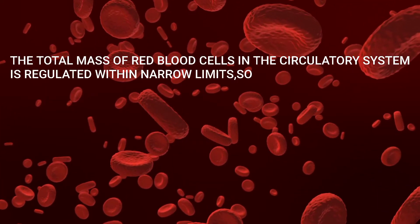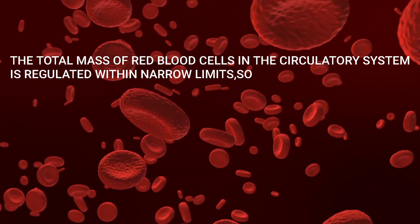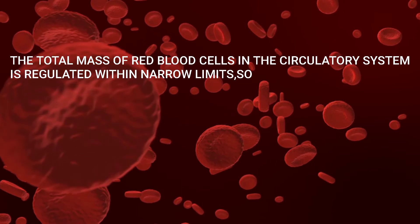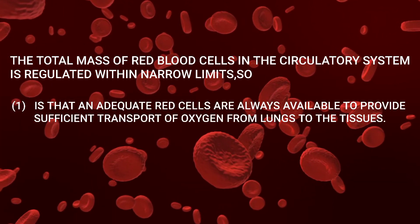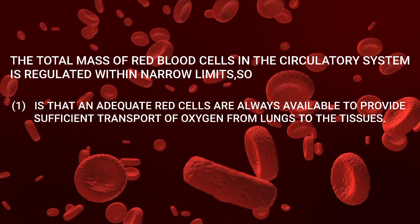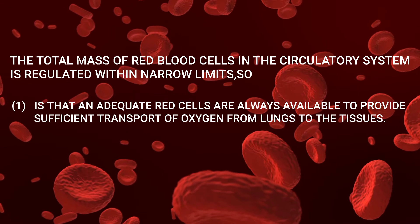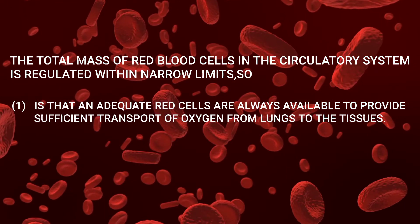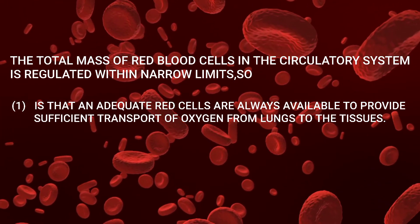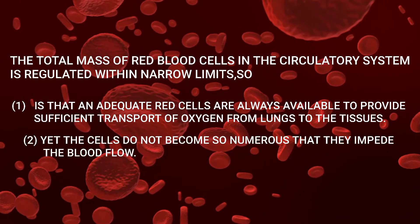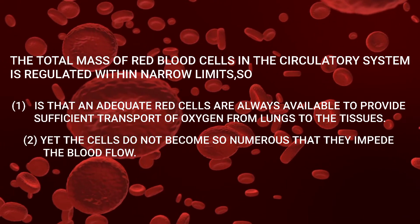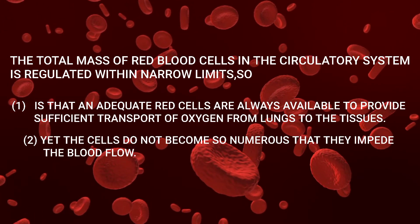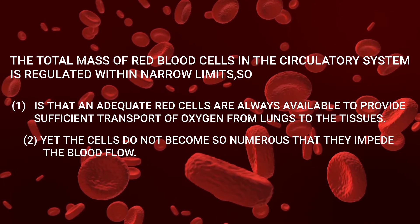The total mass of red blood cells in the circulatory system is regulated within narrow limits. An adequate number of red cells are always available to provide sufficient transport of oxygen from the lungs to the tissues, and yet the cells do not become so numerous that they impede blood flow.